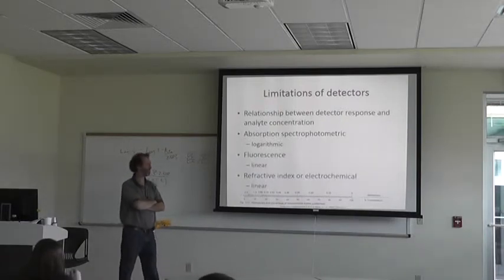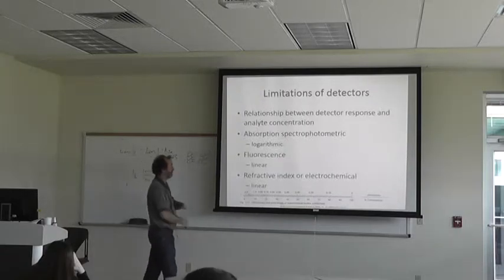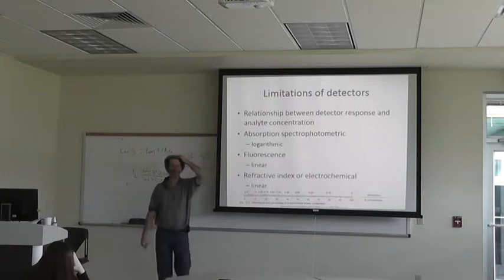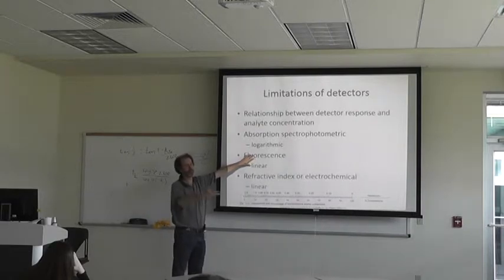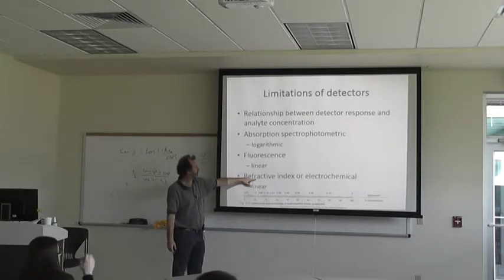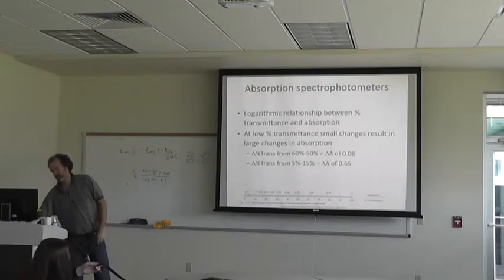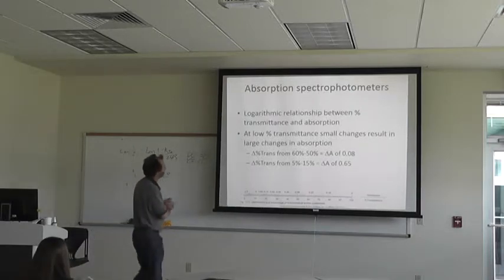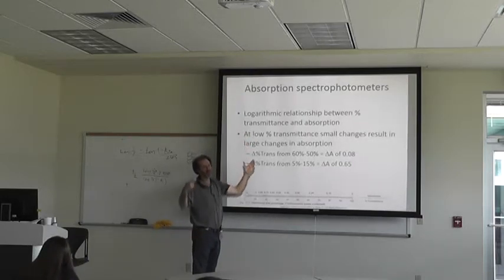If it's really high or really low, the logarithmic scale makes it problematic. Fluorescence is linearly related — the amount of light being shined versus the voltage, because the detector detects the light and that amount of light is proportional to the voltage signal. Refractive index and electrochemical are also linearly related. For the absorption spectrophotometer specifically, there's a logarithmic relationship between percent transmittance and absorbance, because what the machine reads is the percent transmittance.